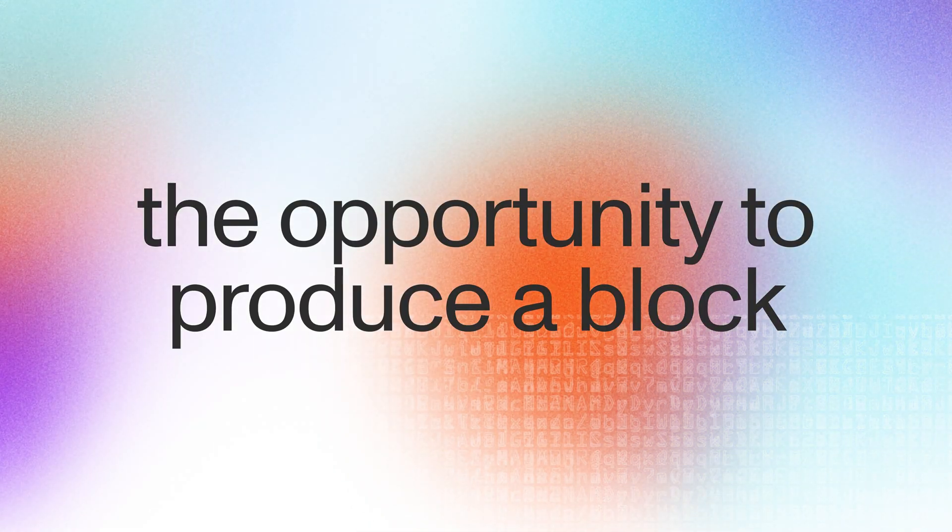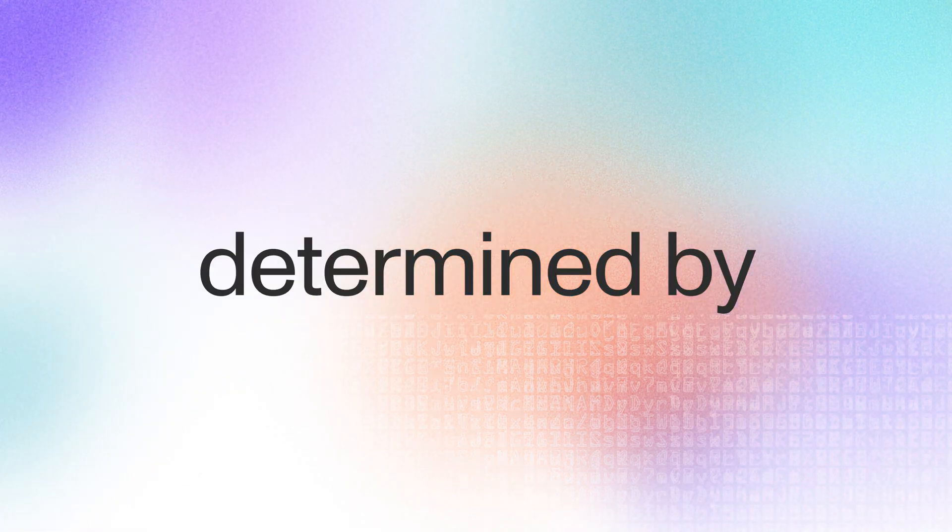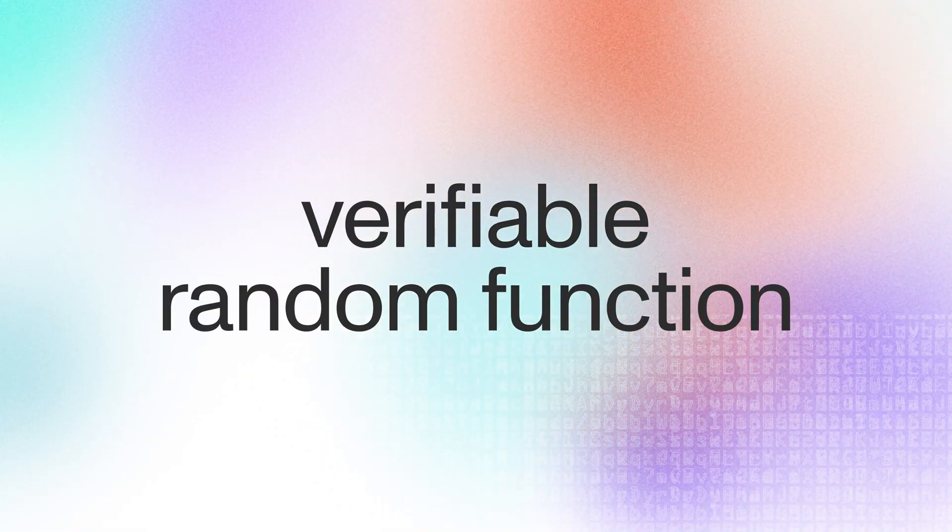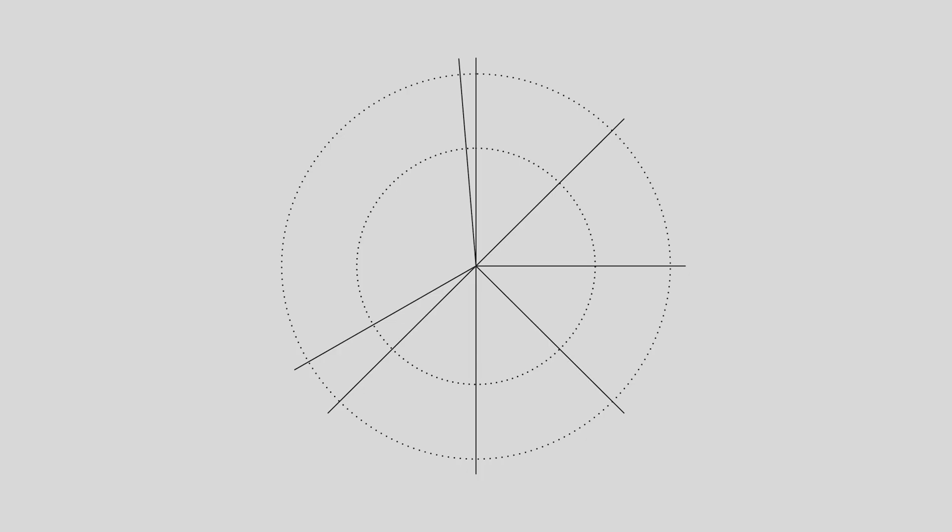Now let's investigate what is equivalent to throwing a dart in Ouroboros. It's the opportunity to produce a block for a slot that's determined by a verifiable random function. This is a random function that needs a private key to run and can be verified with a public key. Executing a VRF is Ouroboros's mechanism for throwing a dart. If your dart hits your slice of the dartboard, then you can create a block. Hitting that part of the dartboard is equivalent to checking that your VRF output is greater than your fraction of the stake.